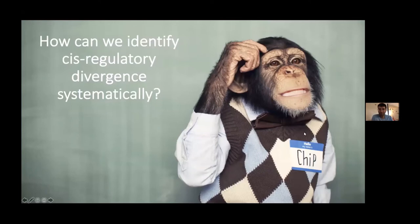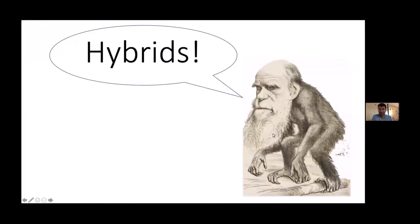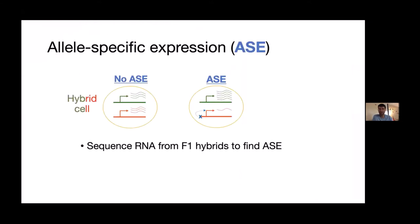Given the central importance of cis-regulation, a key question is how we can identify cis-regulatory divergence systematically across the genome, since that's a very important first step if we're going to study it systematically. The solution my lab uses is employing hybrids to study what's called allele-specific expression — a really powerful method.